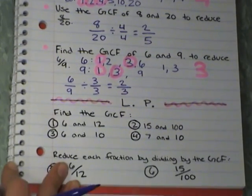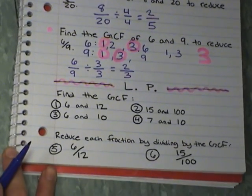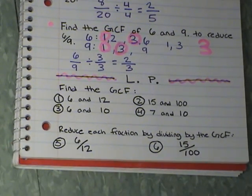Alright, and here's your lesson practice. Find the GCF of 1, 2, 3, and 4. And then do what we just did. Reduce each fraction by dividing by the GCF. The greatest common factor. So when you do that problem, it's a 2 step problem. First find your GCF. Then reduce it by your GCF to get a reduced fraction.